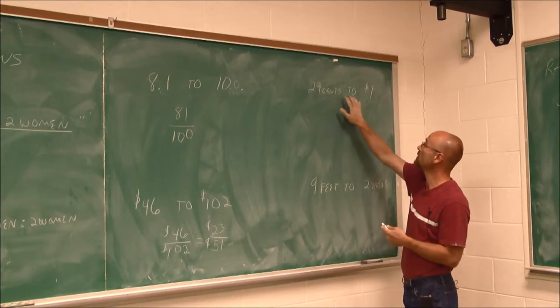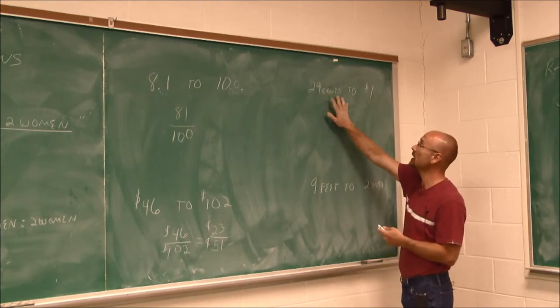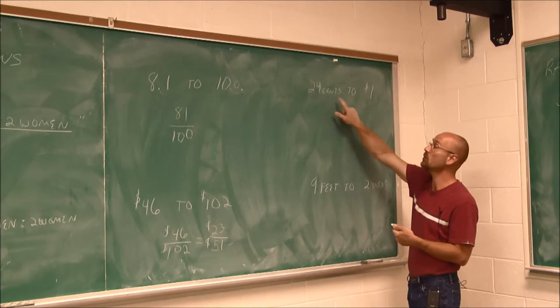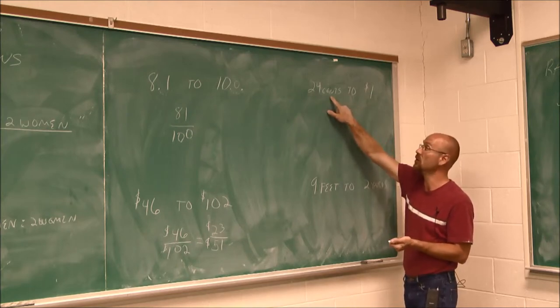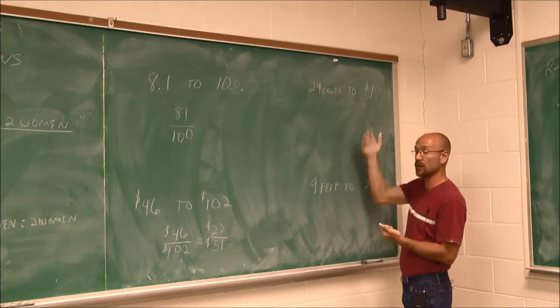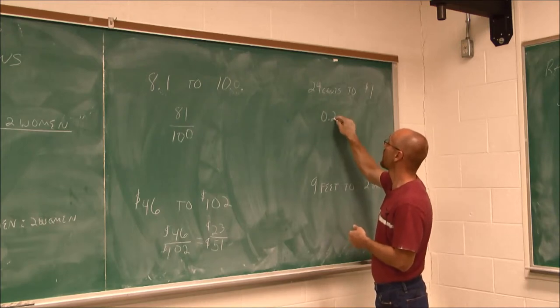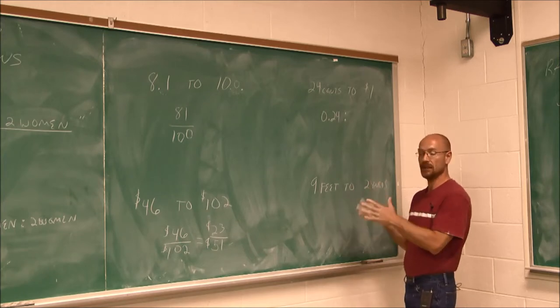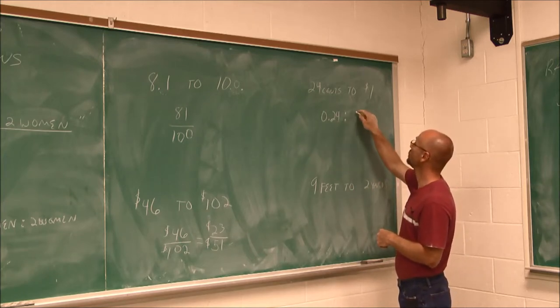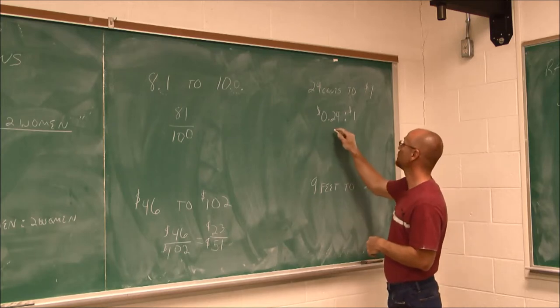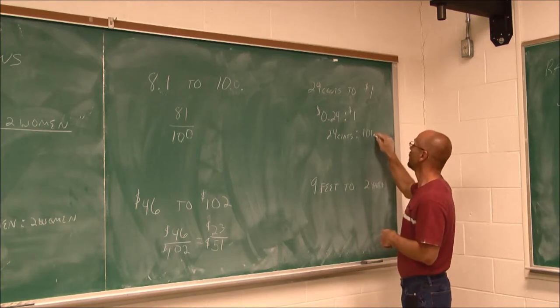I could say 24¢ to $1 is the same as 24¢ to 100¢, because I know there are 100 pennies in $1, or 100¢. Or I could write this as a dollar value by introducing a decimal. We know that 24¢ is $0.24. So either way I do it, here's where I'd use a colon, because I don't want to have a decimal in a fraction. So 24¢ to $1. If I did it the other way, I'd have 24¢ to 100¢.